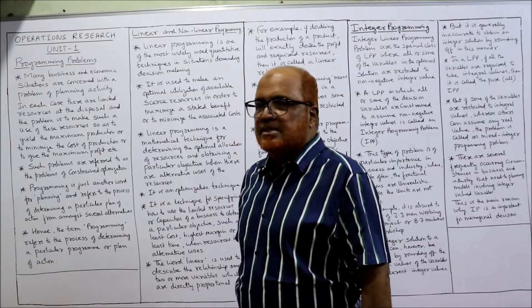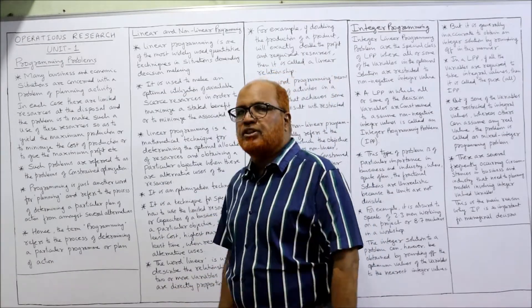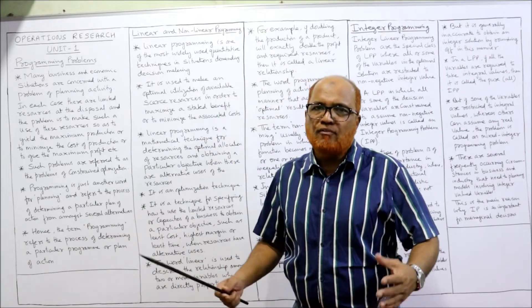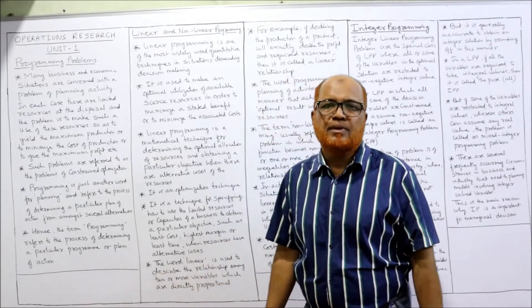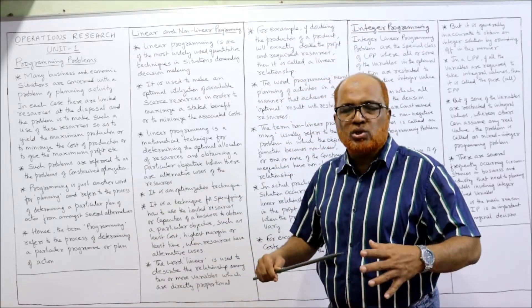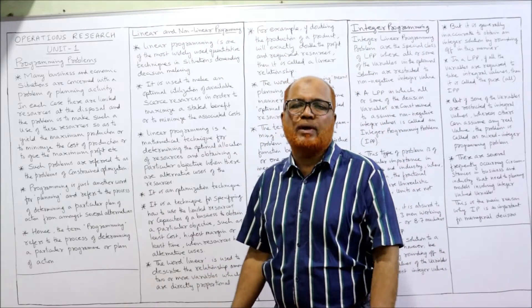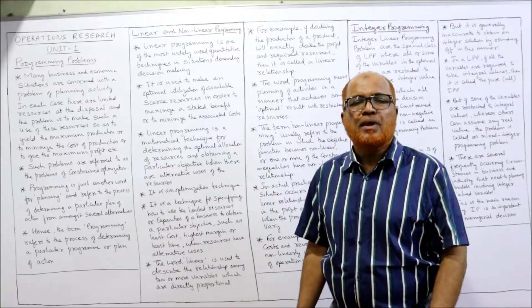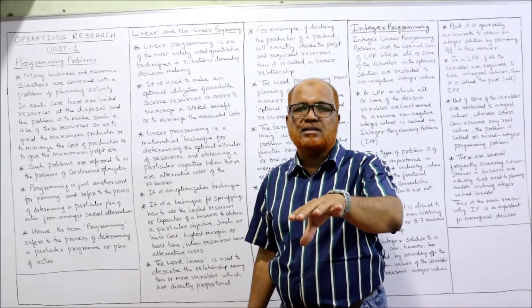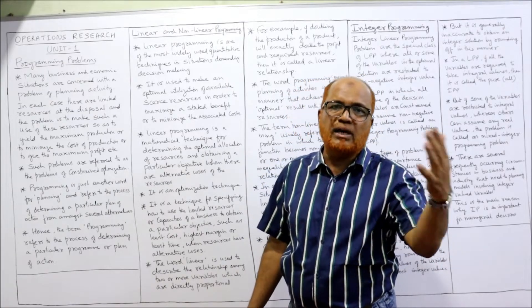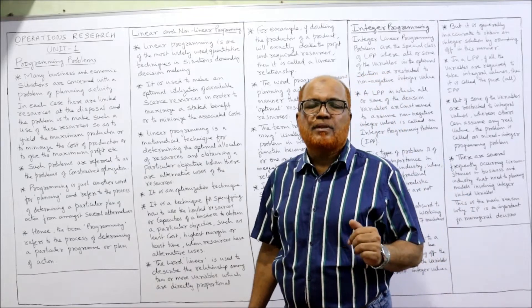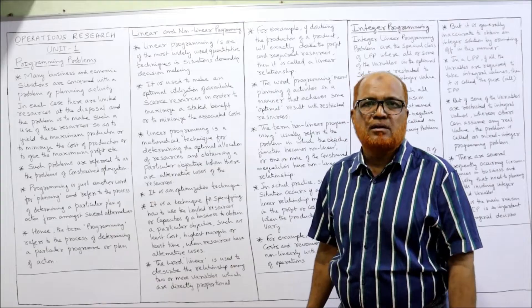In many business and economic situations we are concerned with the problem of planning activity. Remember, planning is the first function of management. Every business and economic situation has to make plans. In each case there are limited resources. We often find that these limited resources have alternative uses — if a resource is used in one activity, it may not be available for another.